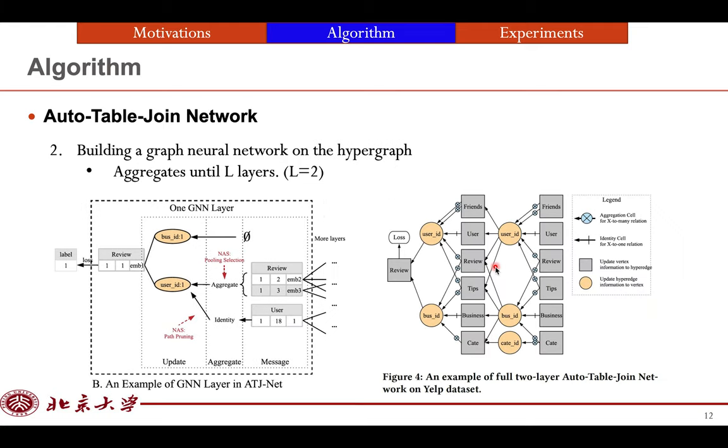Then we have a full two-layer auto-table-join network on this hypergraph. Here on the right, we show the full architecture of the auto-table-join network. The square means the message function, the aggregation circle is the small purple circle, and the yellow circle referred to here. So this is the full two-layer ATJNet architecture on this dataset. Note that the architecture is built automatically according to the schema without manual intervention.